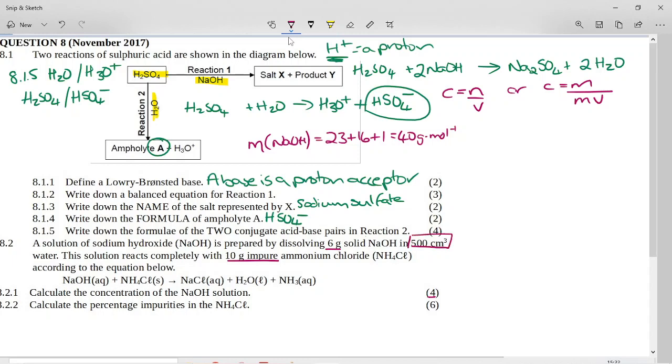It said to you we were in 500 cubic centimeters, which is 500 times 10 to the negative 3 cubic decimeters. Or if you prefer, you can say 0.5 cubic decimeters. Either way, centimeters to cubic decimeters divide by 1000.